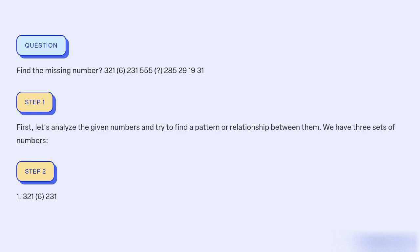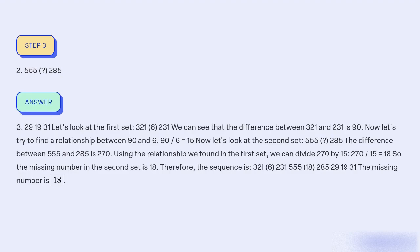First set: 321, 6, 231. Second set: 555, 285. Third set: 29, 19, 31.